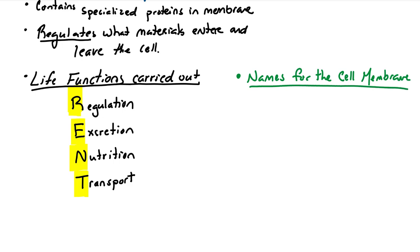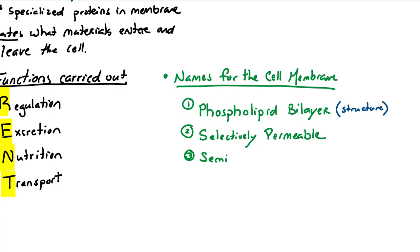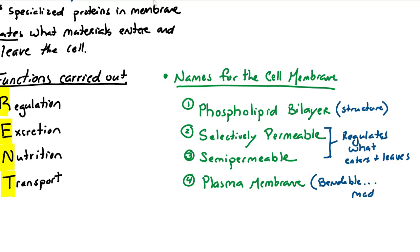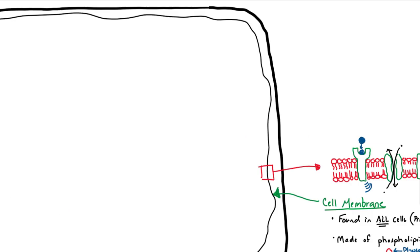The cell membrane also goes by many names. The first major name is the phospholipid bilayer, because it's two layers of phospholipids. The cell membrane is also selectively permeable. It doesn't let everything in and out. You could also think of it as semi-permeable. It's kind of permeable. It lets some things in and some things out. The final name for the cell membrane is the plasma membrane. It gets this name because it is a bendable, flexible membrane.